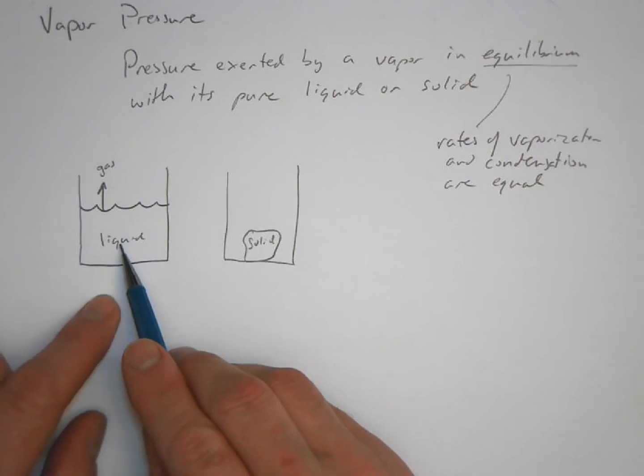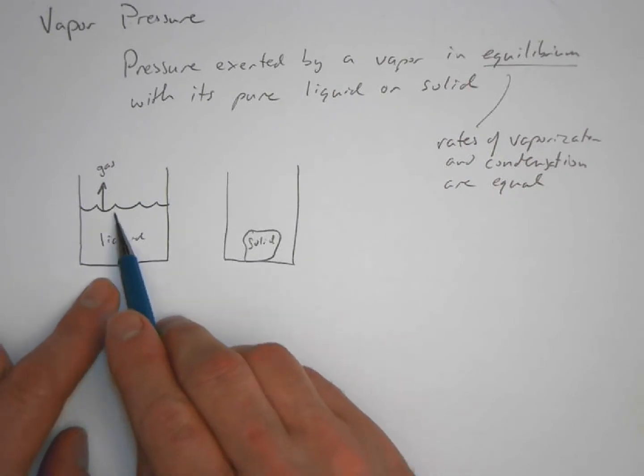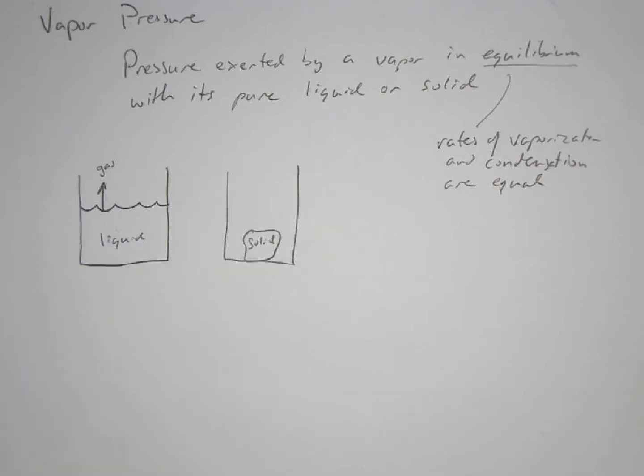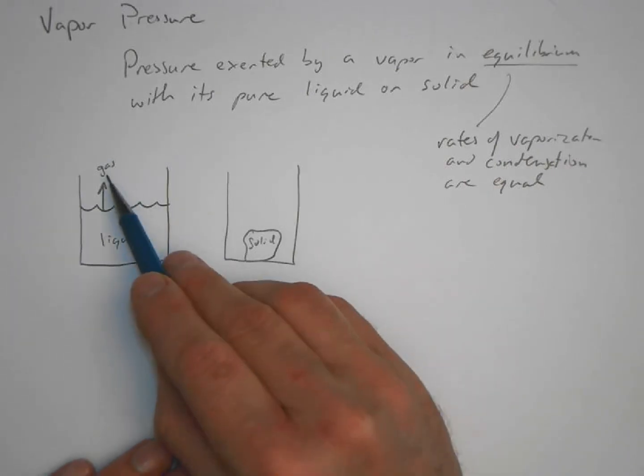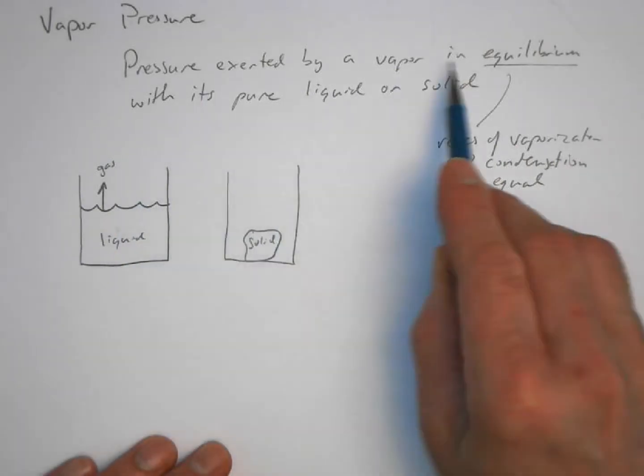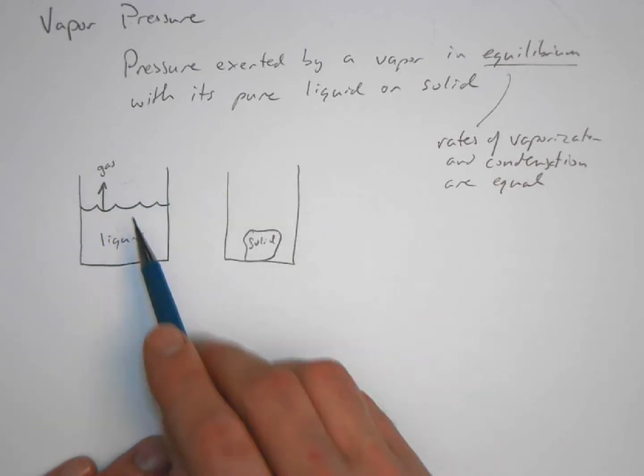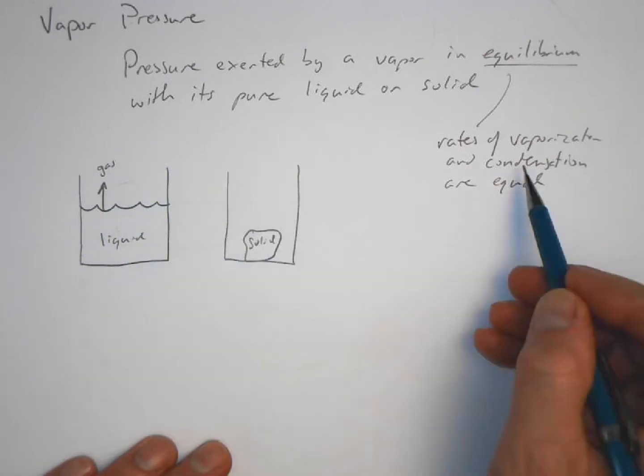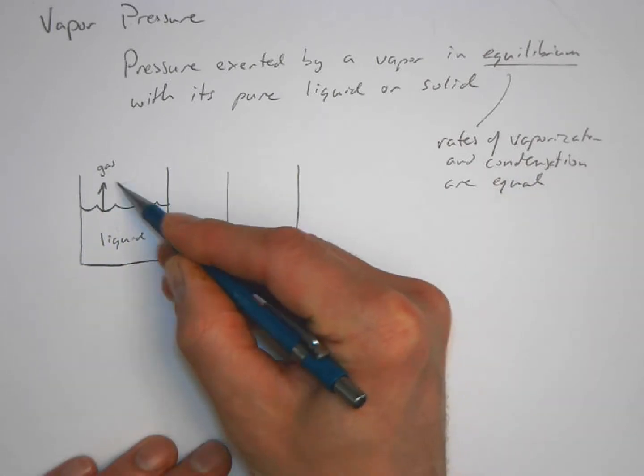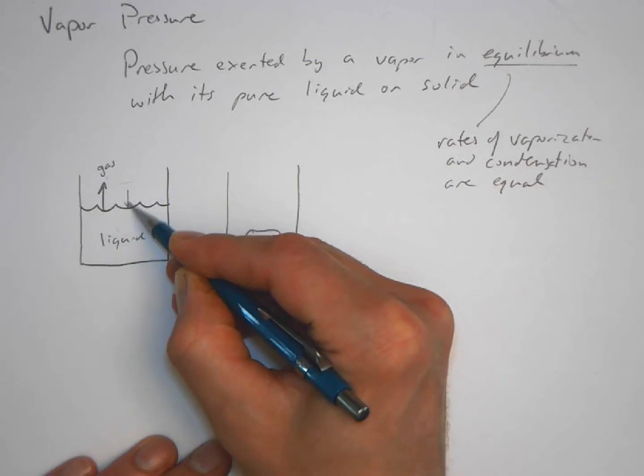Some of those liquid particles have enough energy to make it into the gas phase, and those particles are what would form what's called the vapor pressure. It's the pressure exerted by this gas in equilibrium with this pure liquid or solid. What they're saying here is that the rate of vaporization is equal to the rate of condensation.